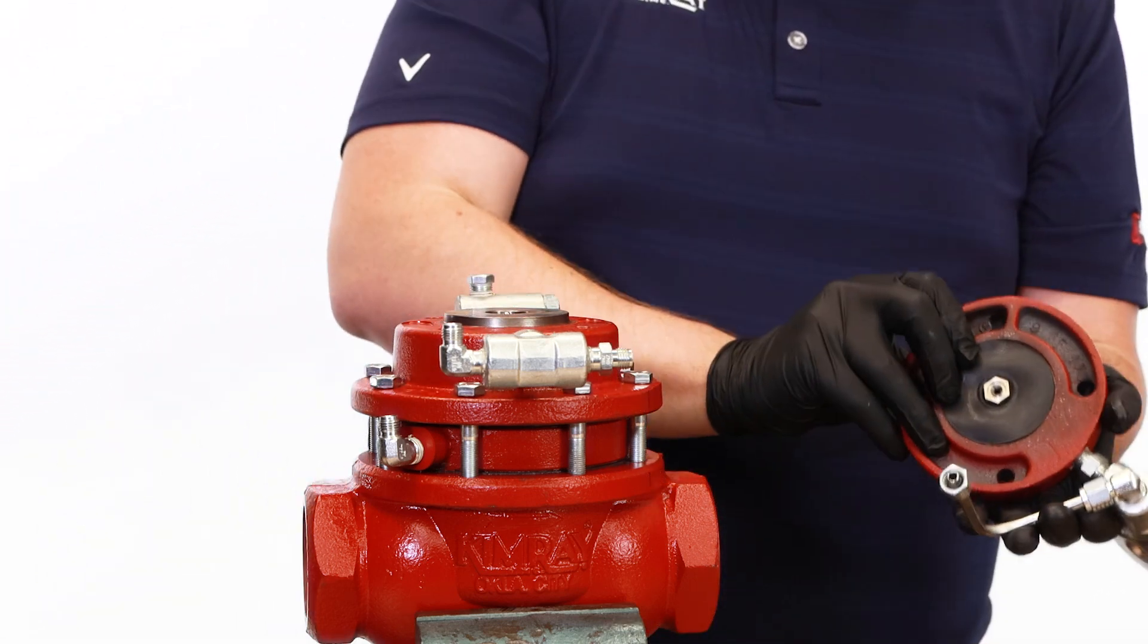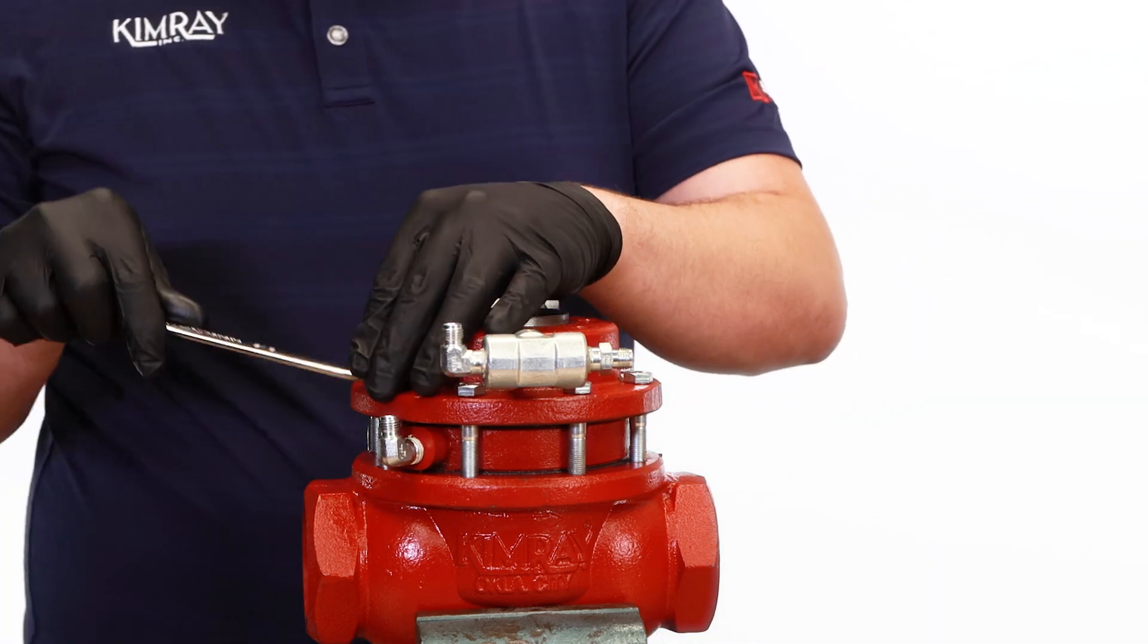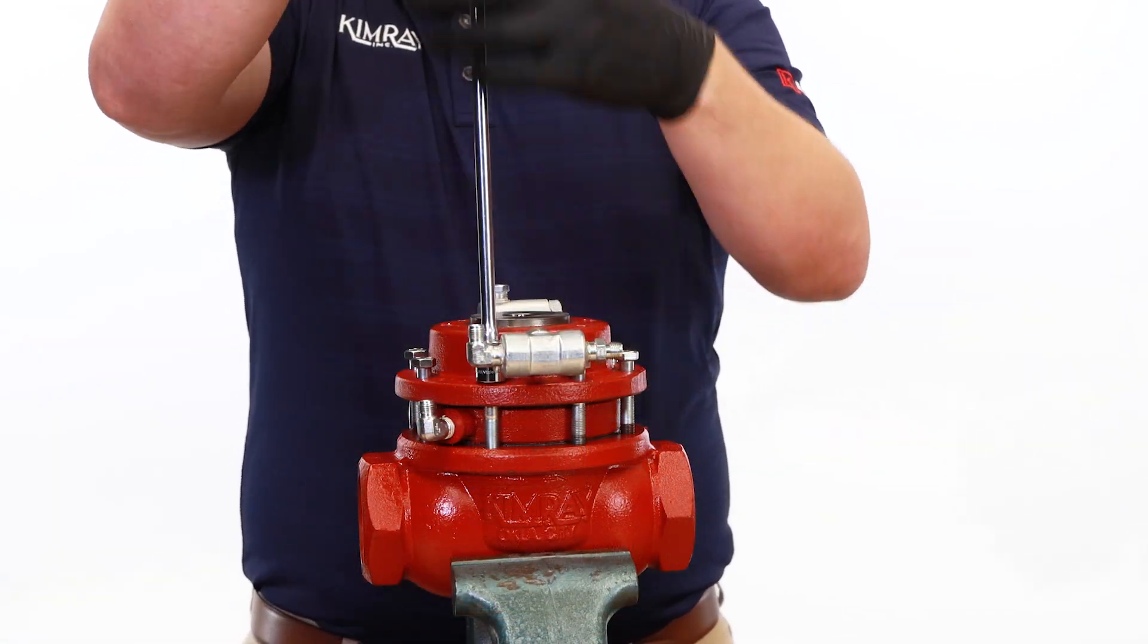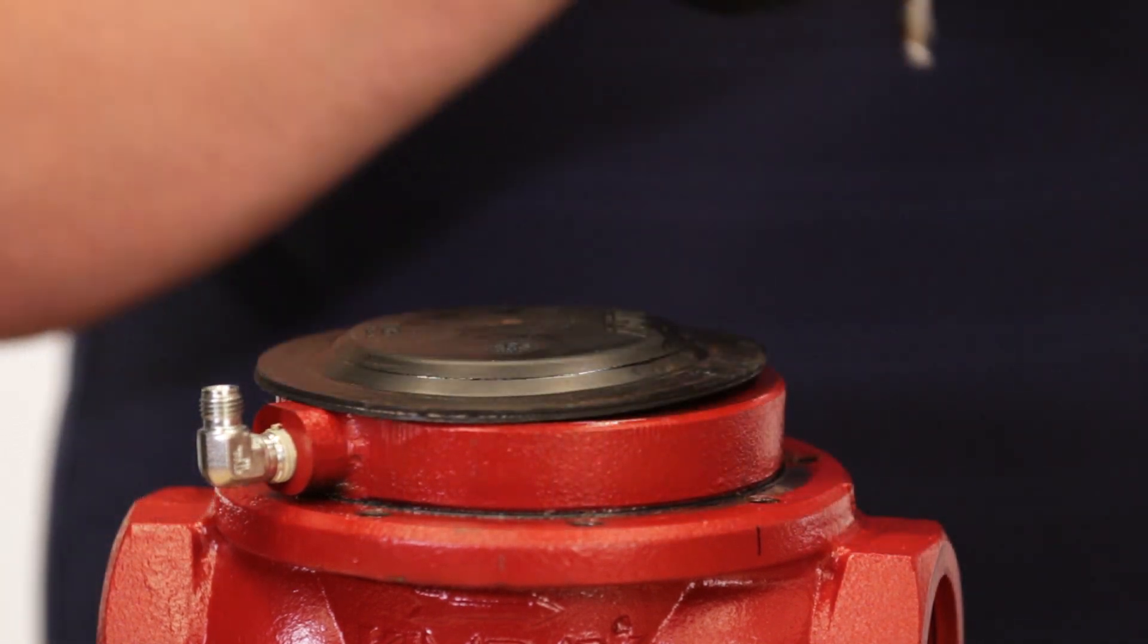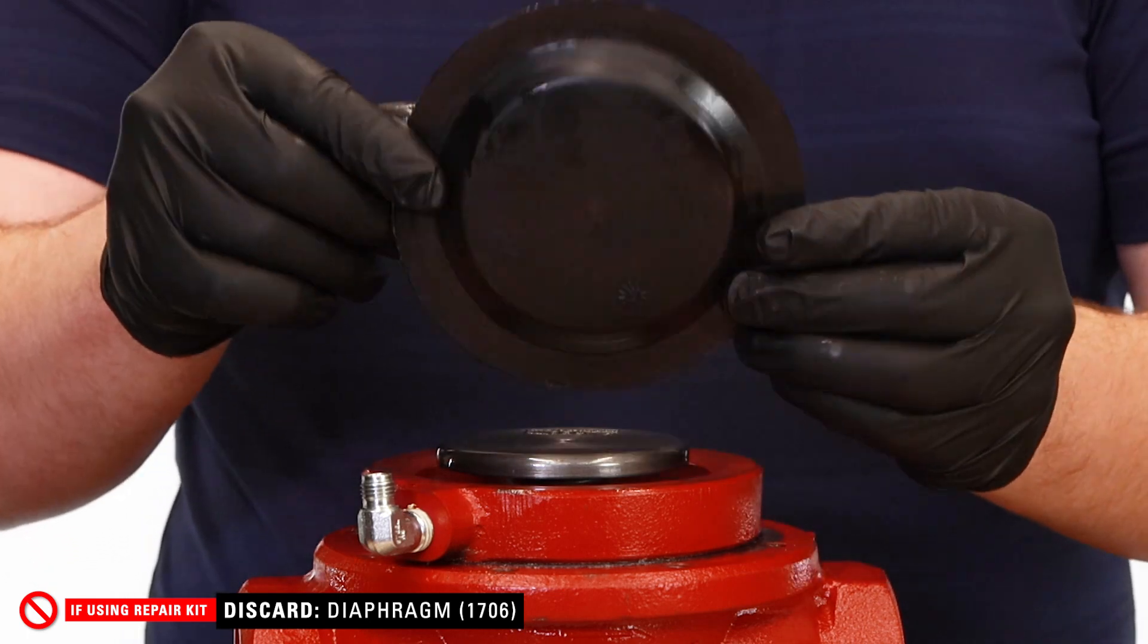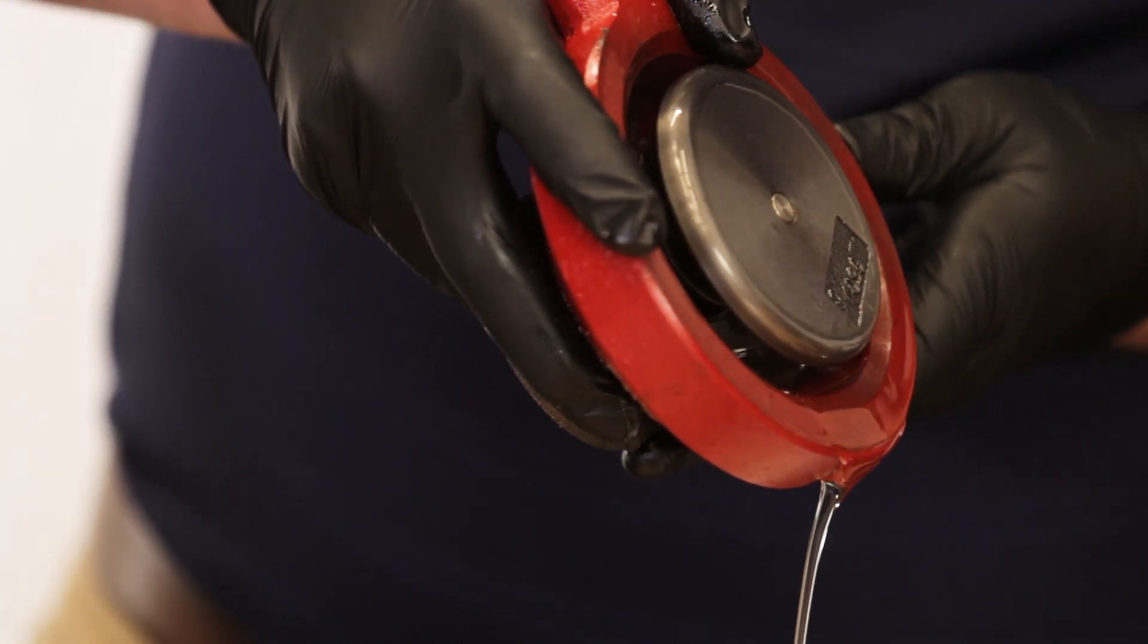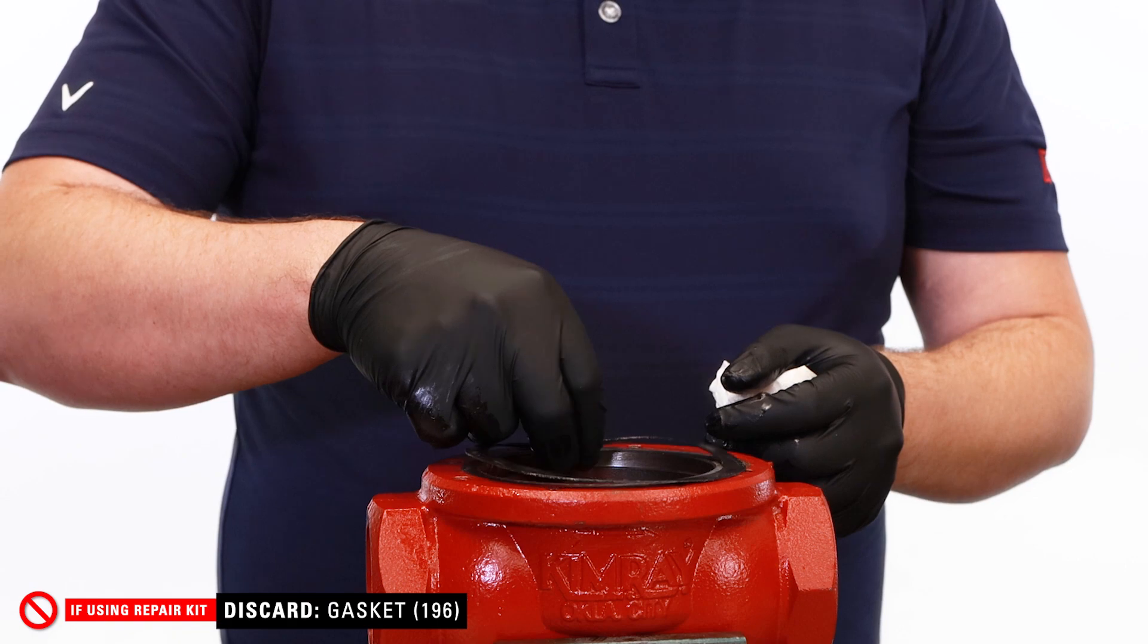Use a 9/16th socket to remove the bolts from the upper housing. Then remove the tubing and upper housing. Inspect the diaphragm for damage. Remove the lower housing and properly discard the oil. Inspect the gasket for damage.